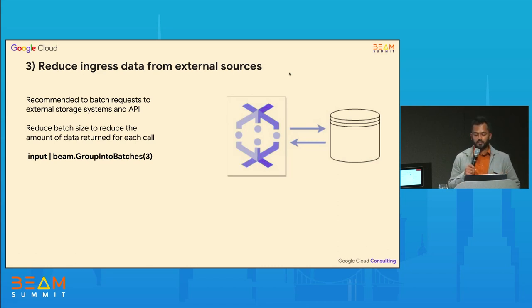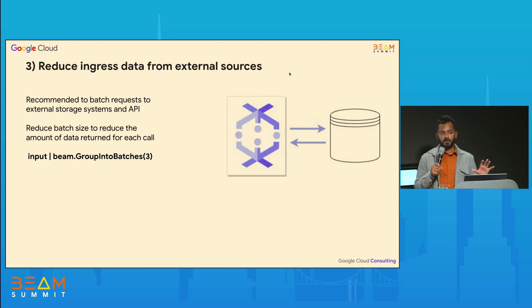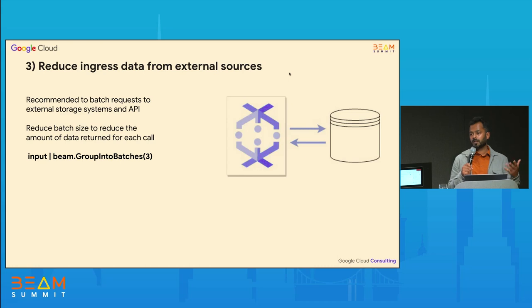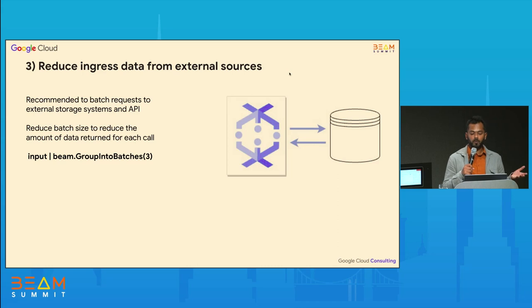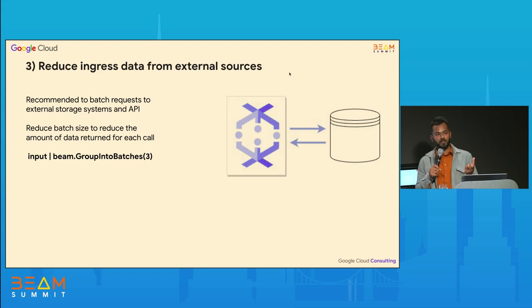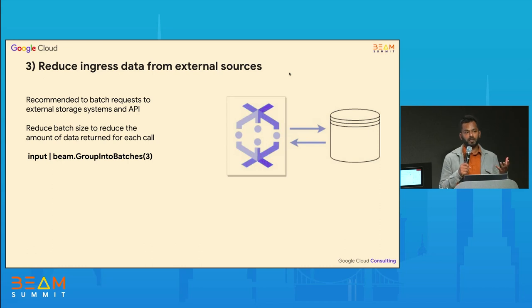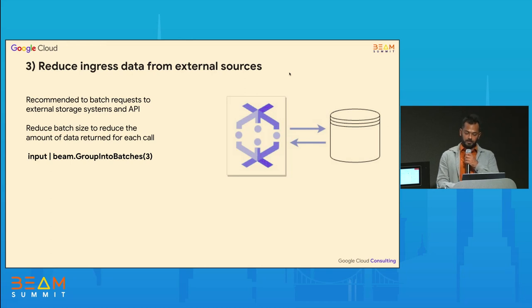For each batch of lookups, that data has to fit in worker memory. Because you have multiple threads, you may have multiple batches of requests being made simultaneously, and all that data from all those requests should fit in memory. If it doesn't, you will run into out-of-memory issues. One quick fix is to reduce the batch size so that the amount of data ingressed into the worker at any point in time fits in worker memory.